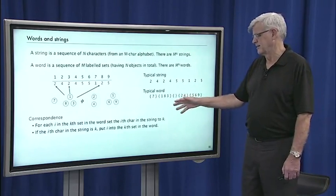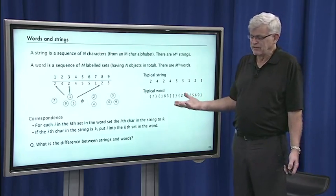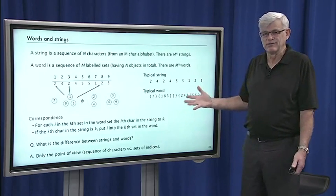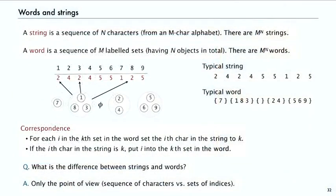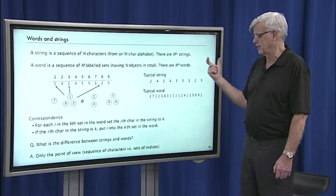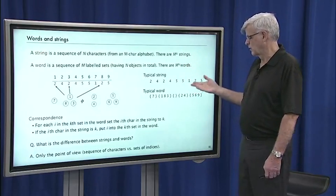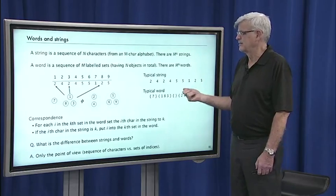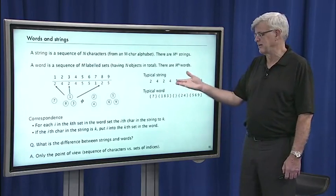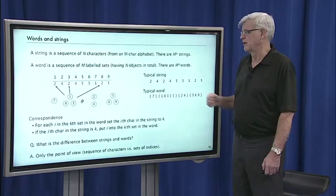So what's the difference between strings and words? There's no difference, it's only the point of view. Last time when we talked about strings, we were concerned about sequences of characters in relation to one another in the sequence—like how many sequences of zeroes in a row are there, or does a pattern occur? For this lecture, in words, we're more concerned with the sets of indices and not so much the sequence. There are applications where that point of view is the one we want to push.